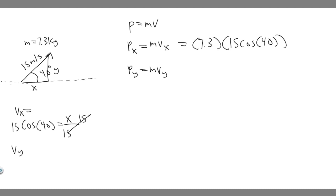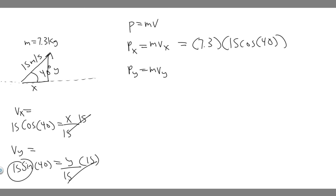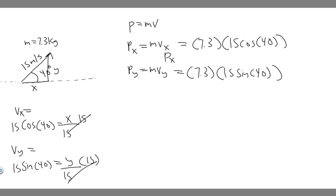Now for the y-component: sine of 40° equals opposite over hypotenuse, so sine(40°) = y / 15. Multiplying both sides by 15 gives vy = 15 × sin(40°). So the momentum in y is py = 7.3 × 15 × sin(40°).